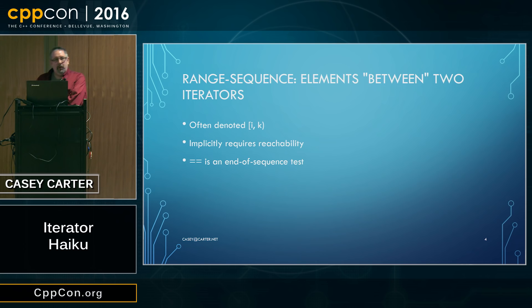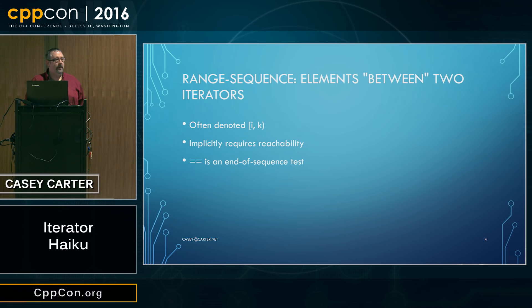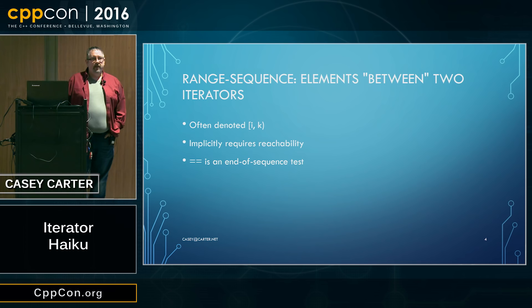The interval notation implicitly requires reachability — it's defined in the standard that this notation means that some number of increments applied to i will result in the value of k. It's a finite interval. Essentially, the equality operator is an end-of-sequence test that we can apply to these two things in the interval. We can test i to see if it's equal to k, meaning we've reached the end of the sequence.